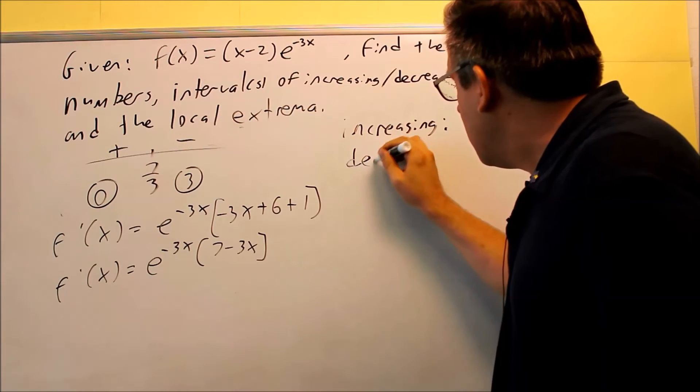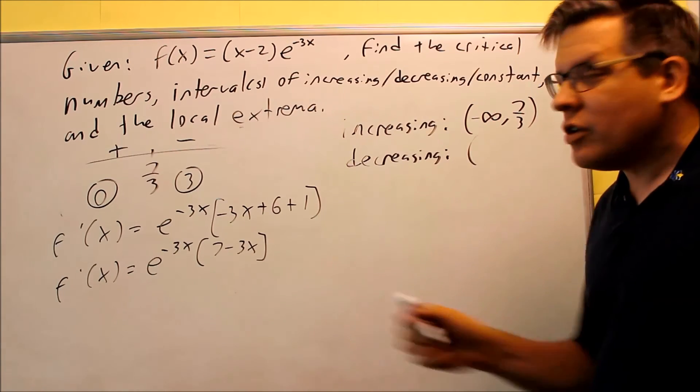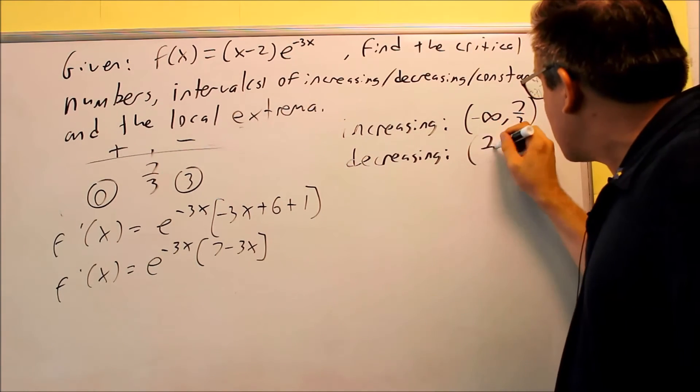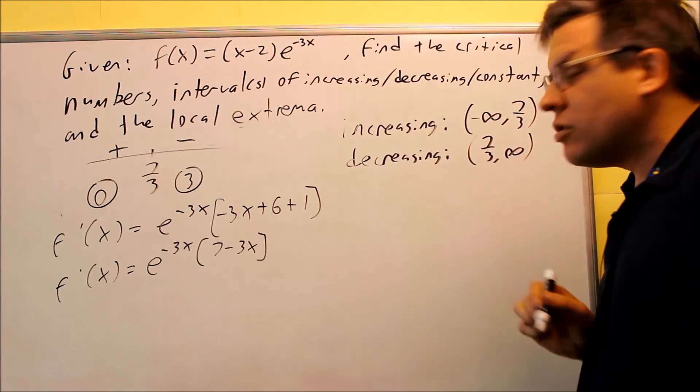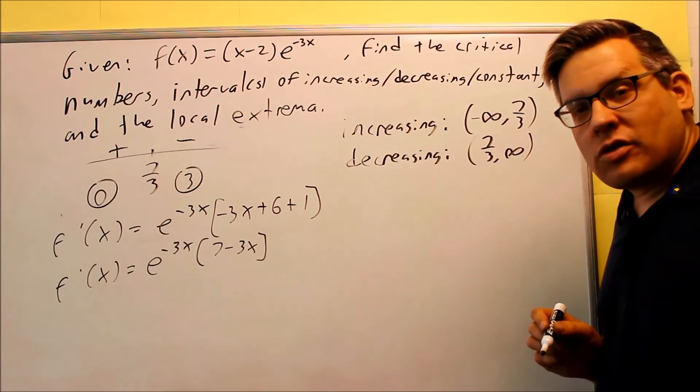Then we're going to do decreasing. And decreasing is going to be where you have a negative on your number line. That's going to be from 7 thirds to infinity. So we have our increasing and our decreasing.